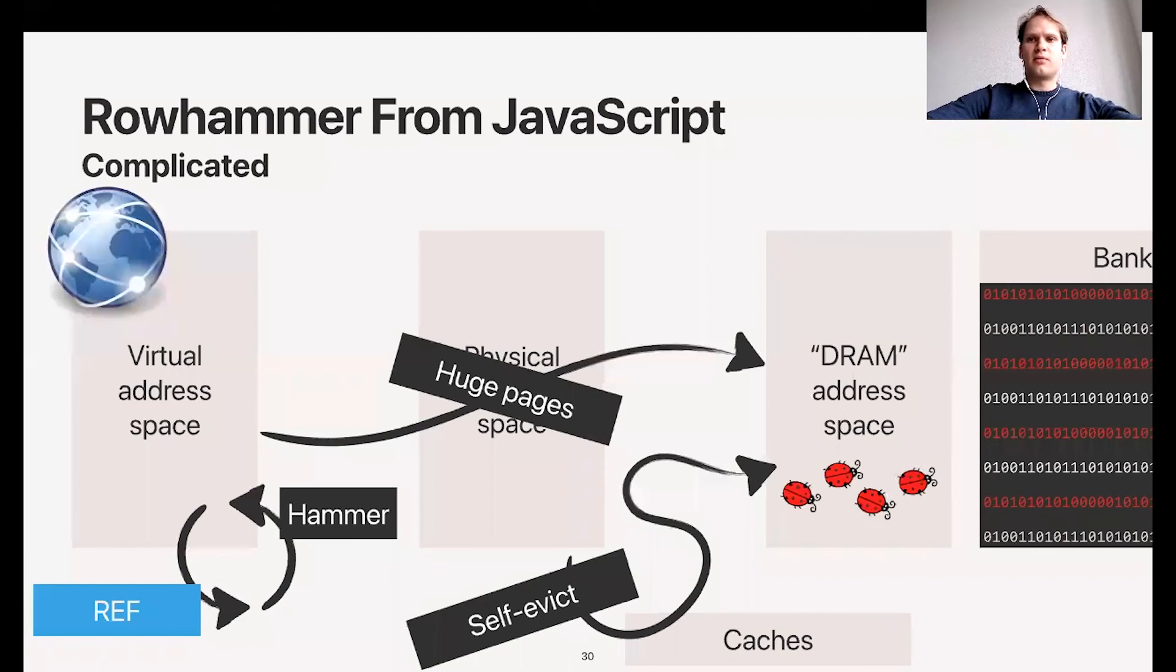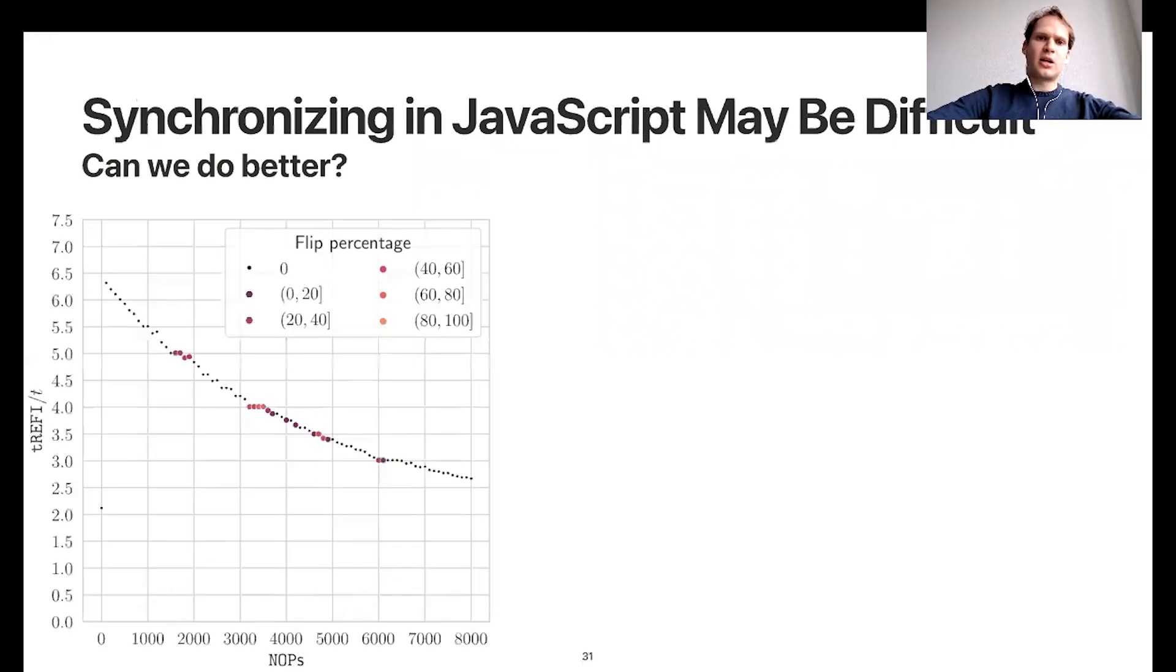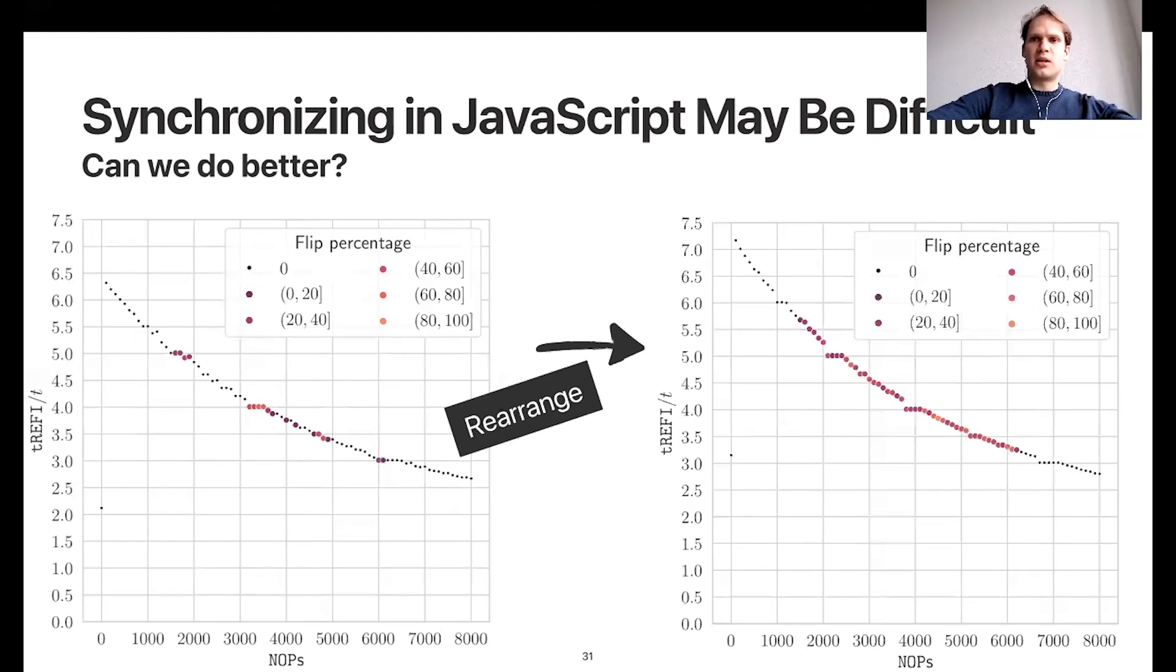That's great - we now have synchronization, huge pages, and self-eviction. But can we do better? Synchronization with precise timing is not easy because we need a high-resolution timer, and we don't have a high-resolution timer in the browser. What we did is rearranged our misses and hits in such a way to create the same pattern but in a slightly different way. Actually, we were able to trigger bit flips also when we're not synchronized, as you can see here. More about this in the paper.